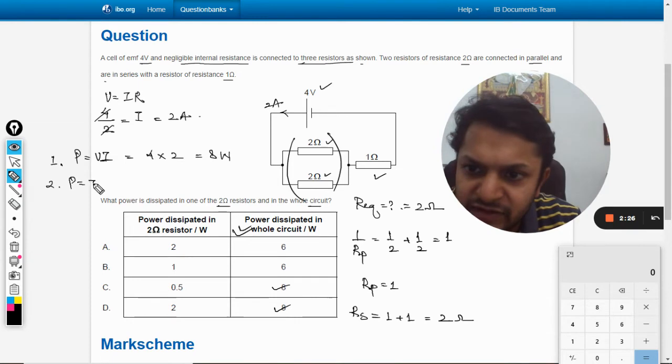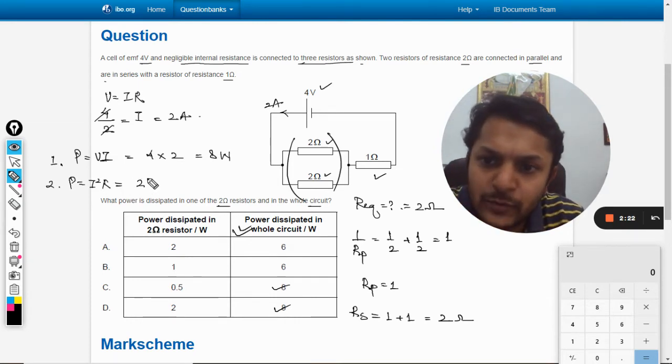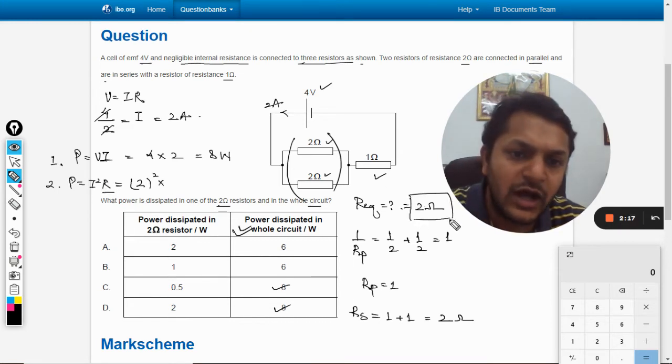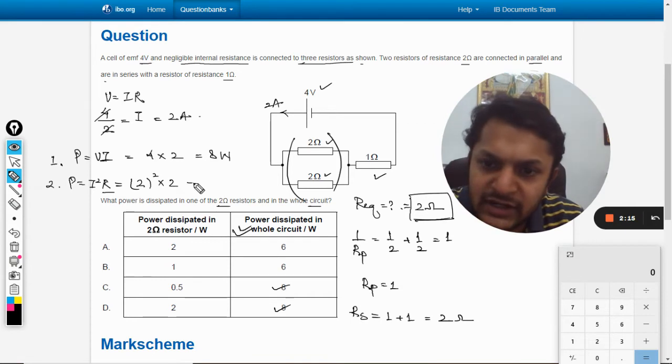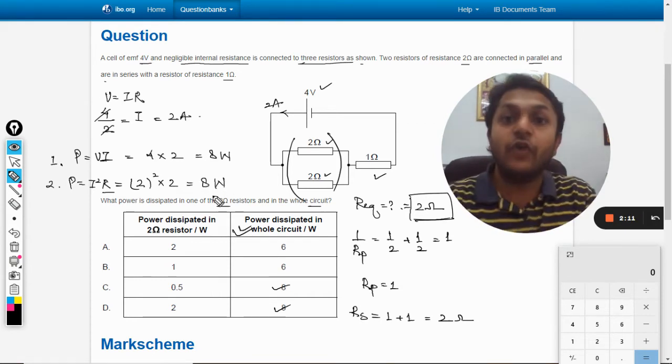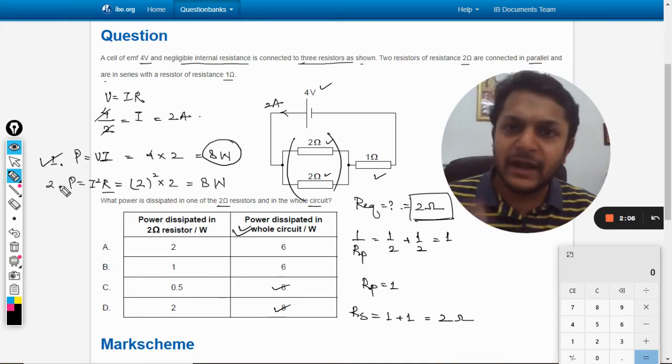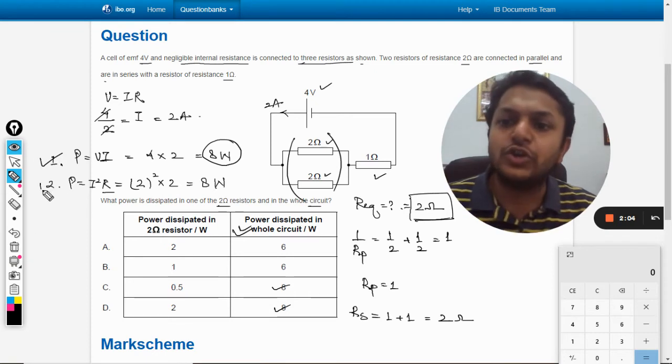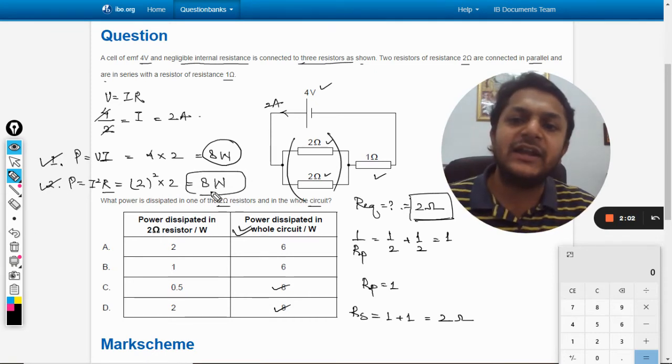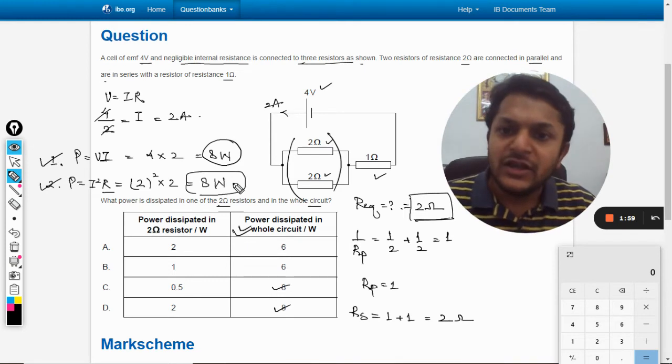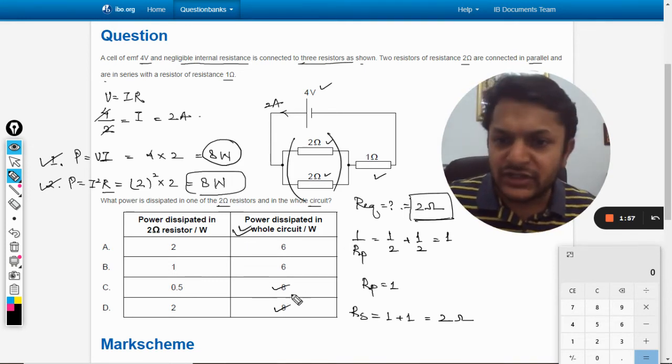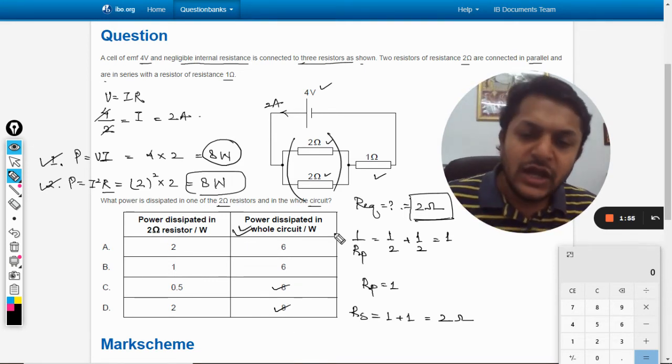Specifically C and D we would be having answer in C and D. Now in the second method, P = I²R. What is the current? 2² multiply by R equivalent, so R equivalent is 2. Multiplying by 2 we get the answer 8 watt. So it means 8 watt is the power that is given by the battery, which is equal to the total power dissipated in the resistance in the circuit.